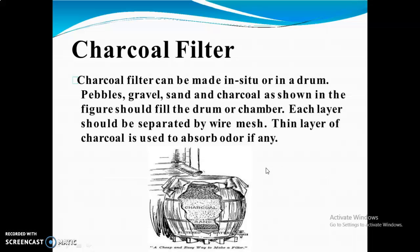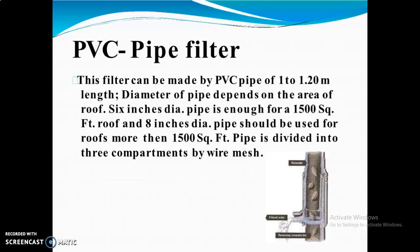A thin layer of charcoal is used to absorb odour if any. The third is the PVC pipe filter. This filter can be made by a PVC pipe of 1 to 1.20 meter length. The diameter of the pipe depends on the area of the roof — a 6-inch diameter pipe is enough for 1500 square feet of roof, and an 8-inch diameter pipe should be used for a roof more than 1500 square feet. This is divided into 3 compartments by wire mesh.